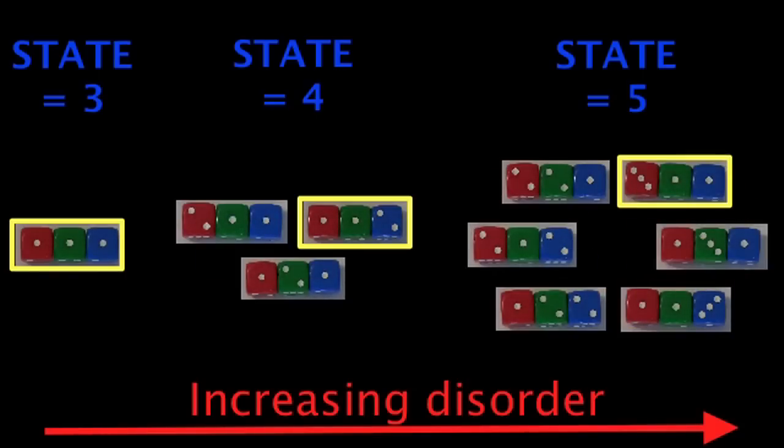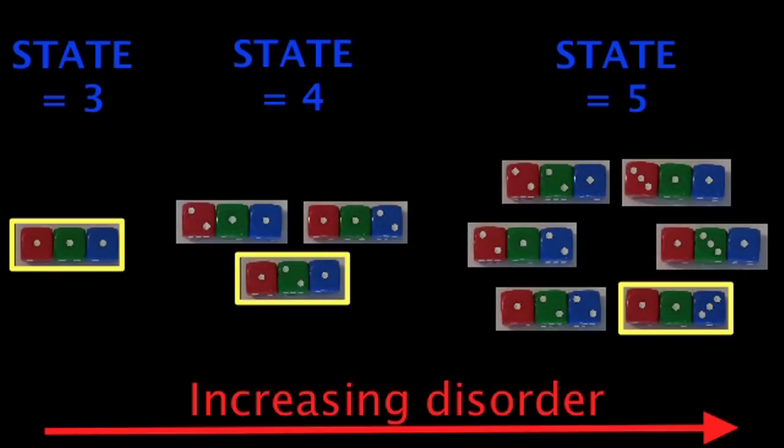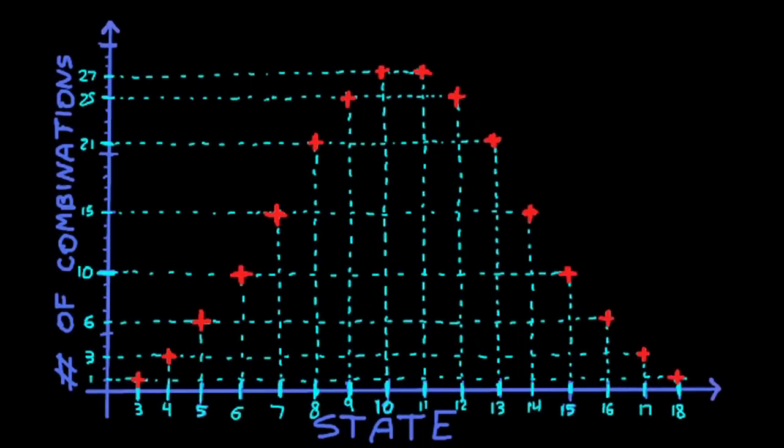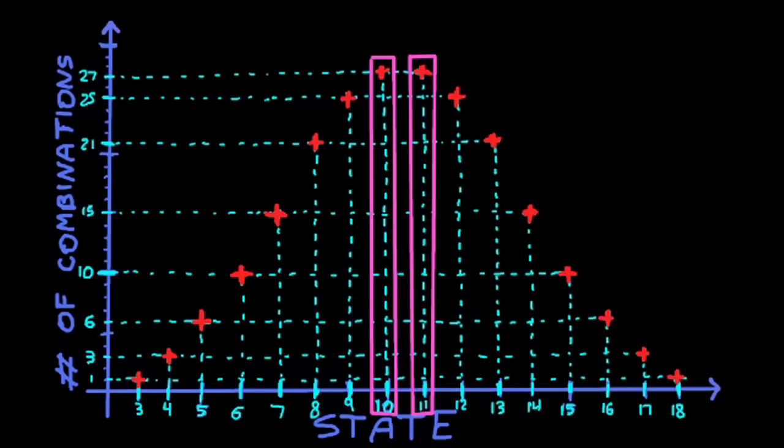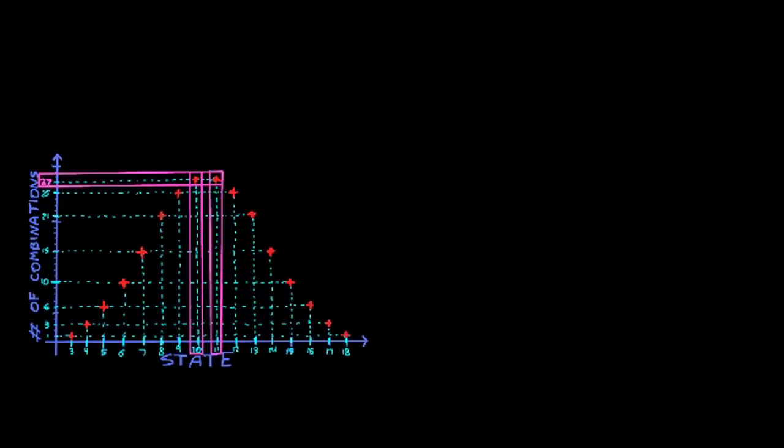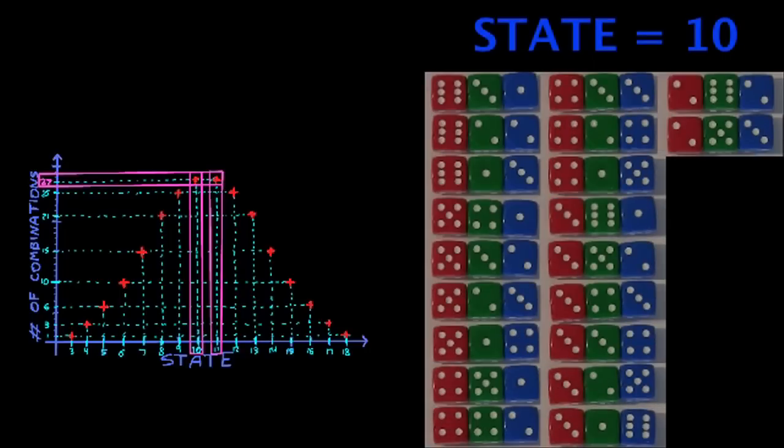The more possibilities there are for a given state, the more disordered that state is. Here's a plot that shows the number of combinations as a function of the state. There's a maximum for 10 and 11, which can each be achieved through 27 possible combinations. For example, this shows all the combinations that result in the state 10. This is the state of highest disorder.